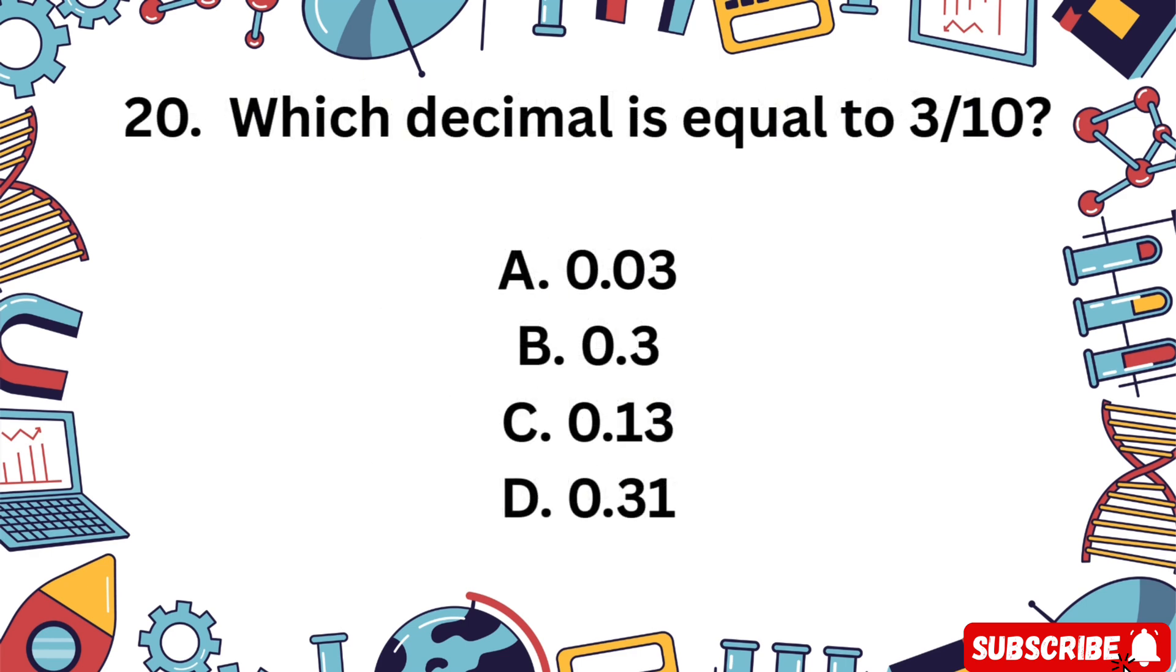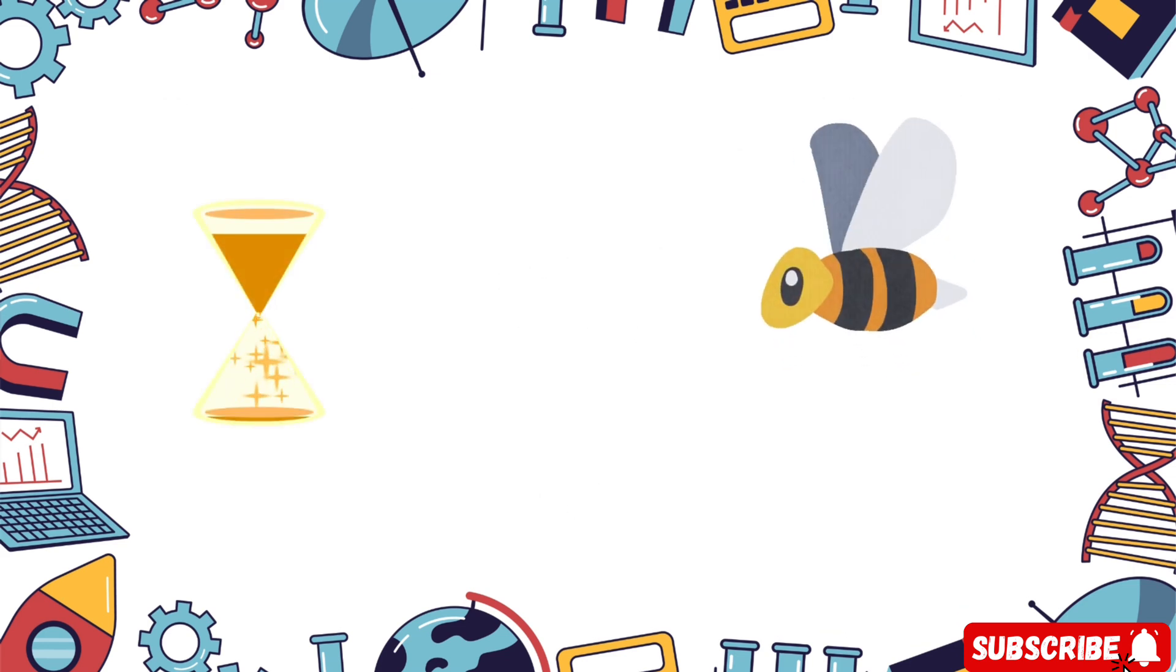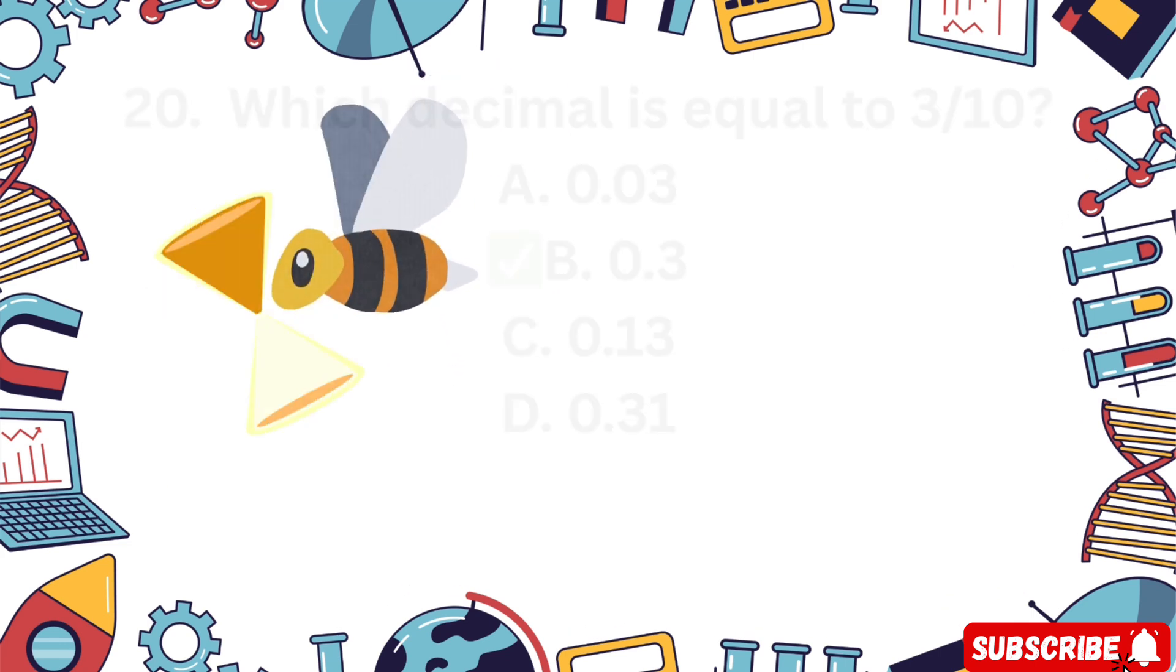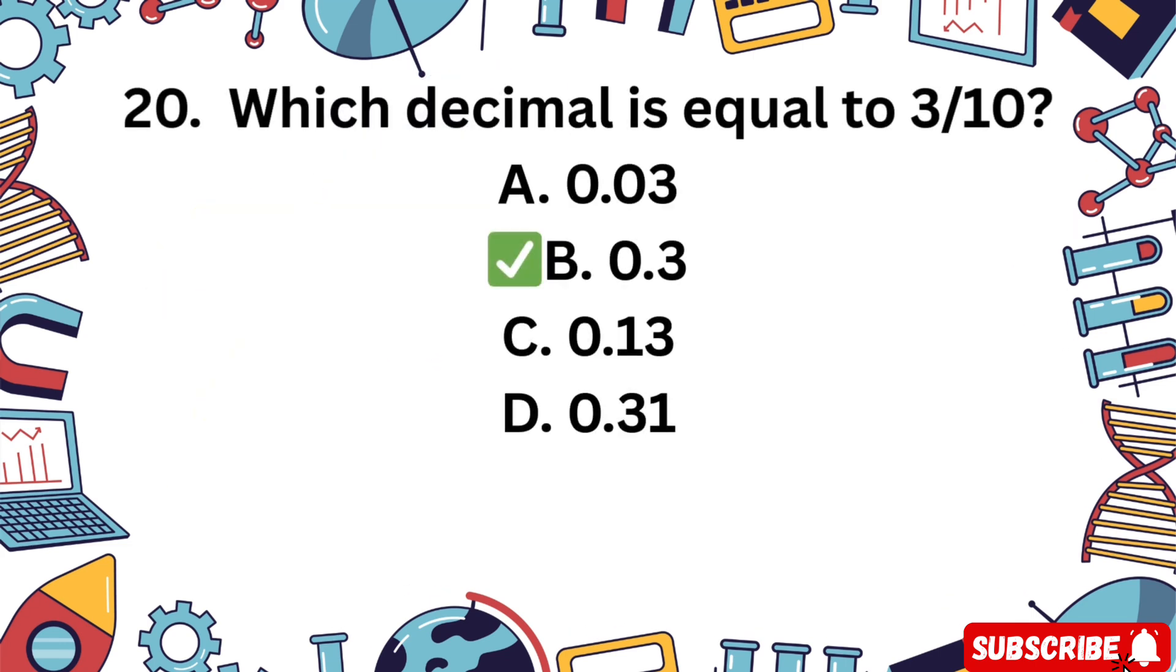Question 20. Which decimal is equal to 3 tenths? A 0.03, B 0.3, C 0.13, D 0.31. Convert the fraction 3 over 10 to a decimal. Time starts now. The correct answer is B 0.3. That's 3 tenths.